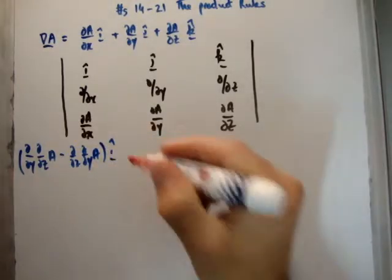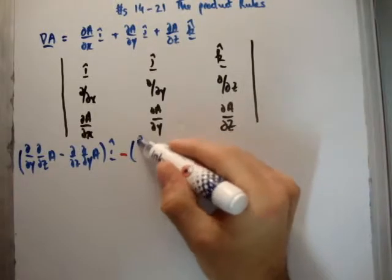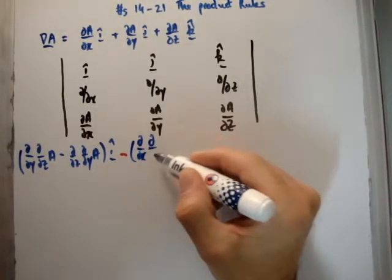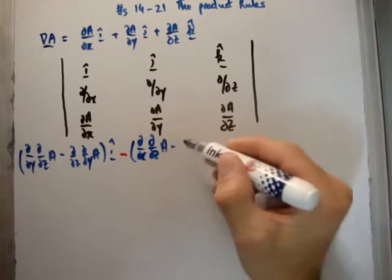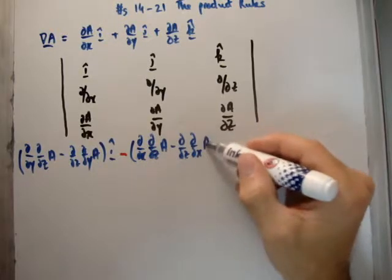We're going to have a minus term. Del del X, del del Z on A, minus del del Z, del del X on A, and that's in the j hat.